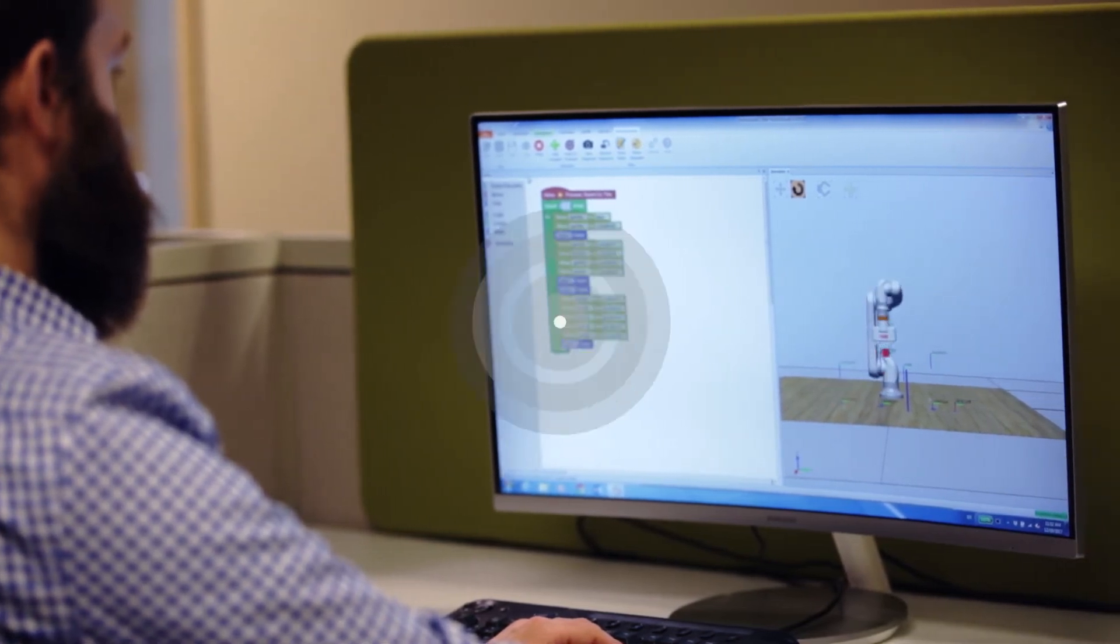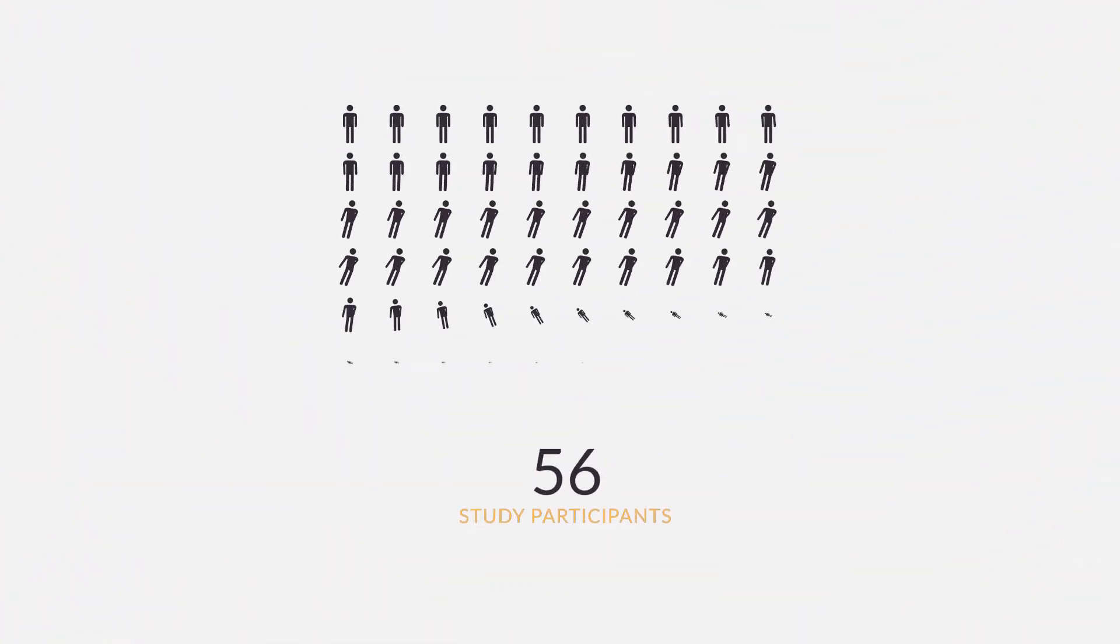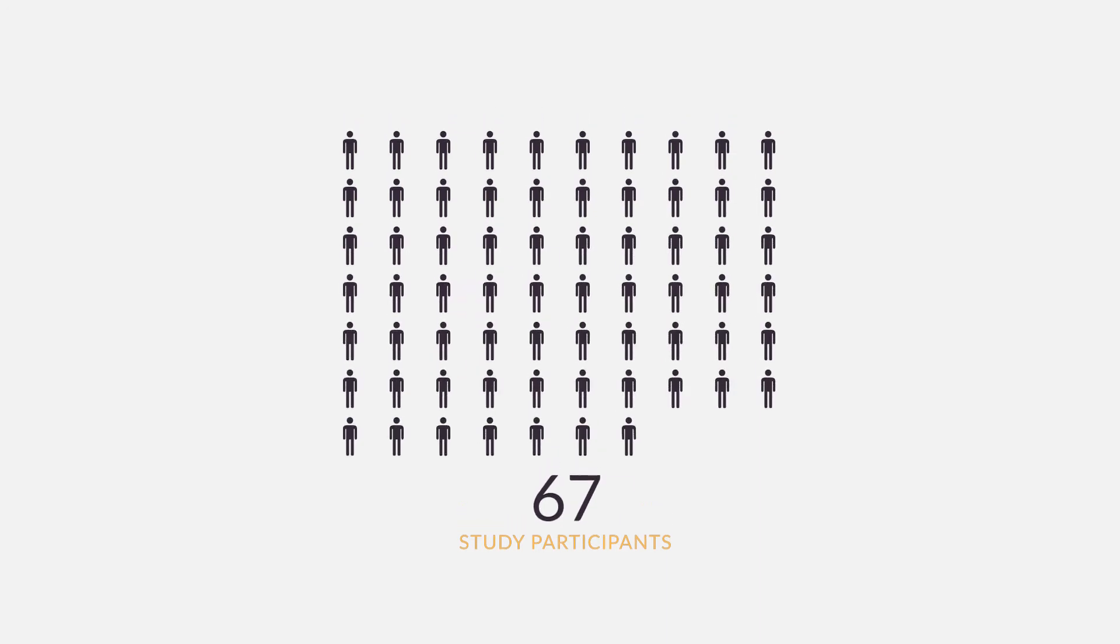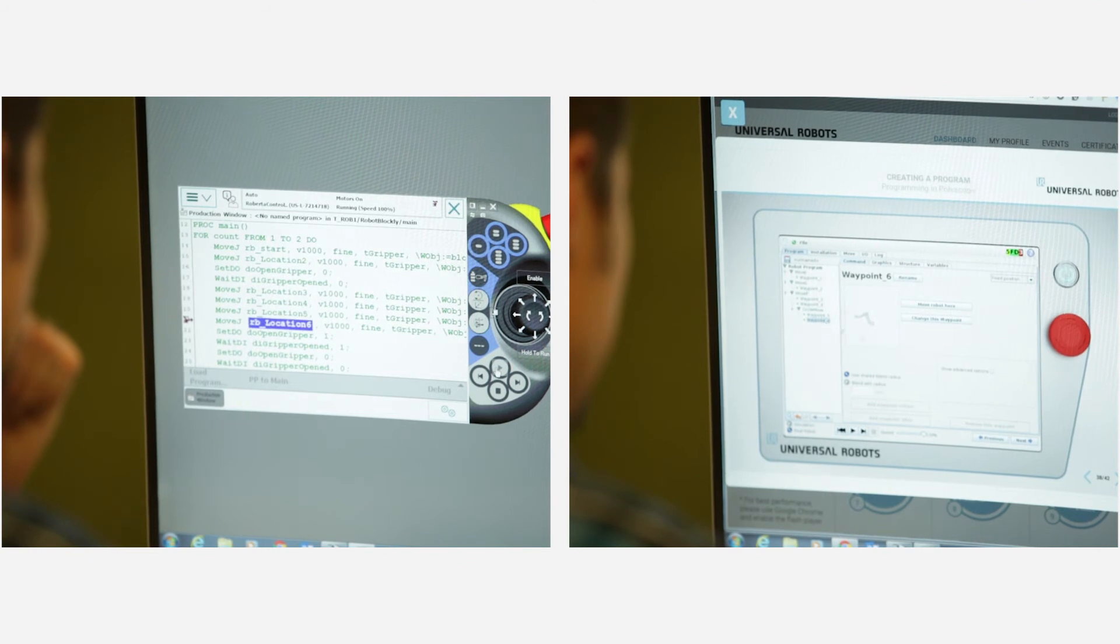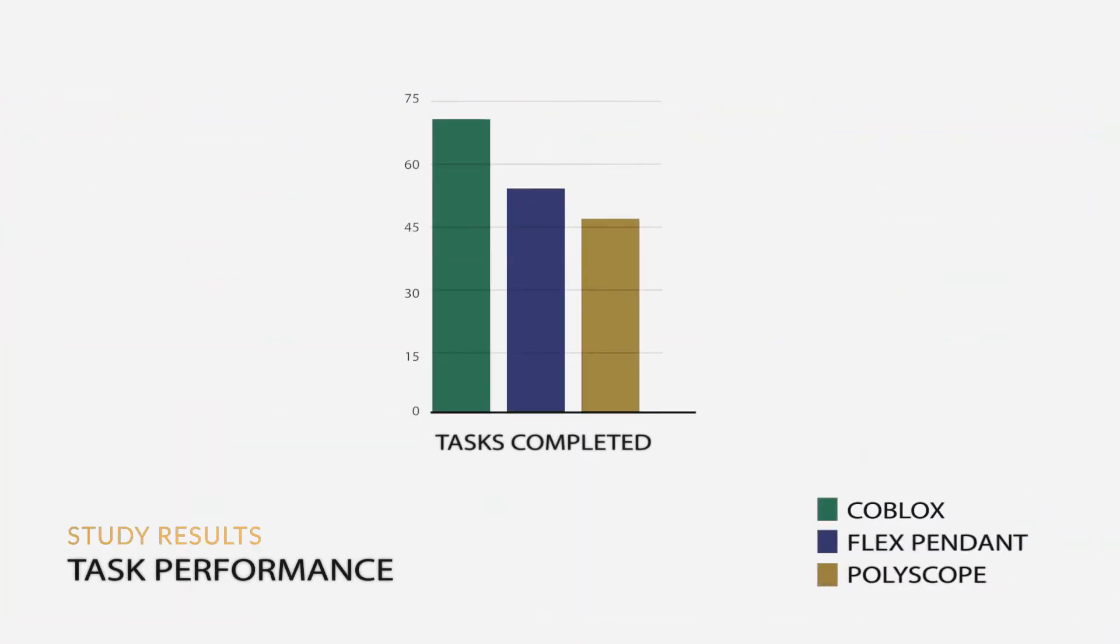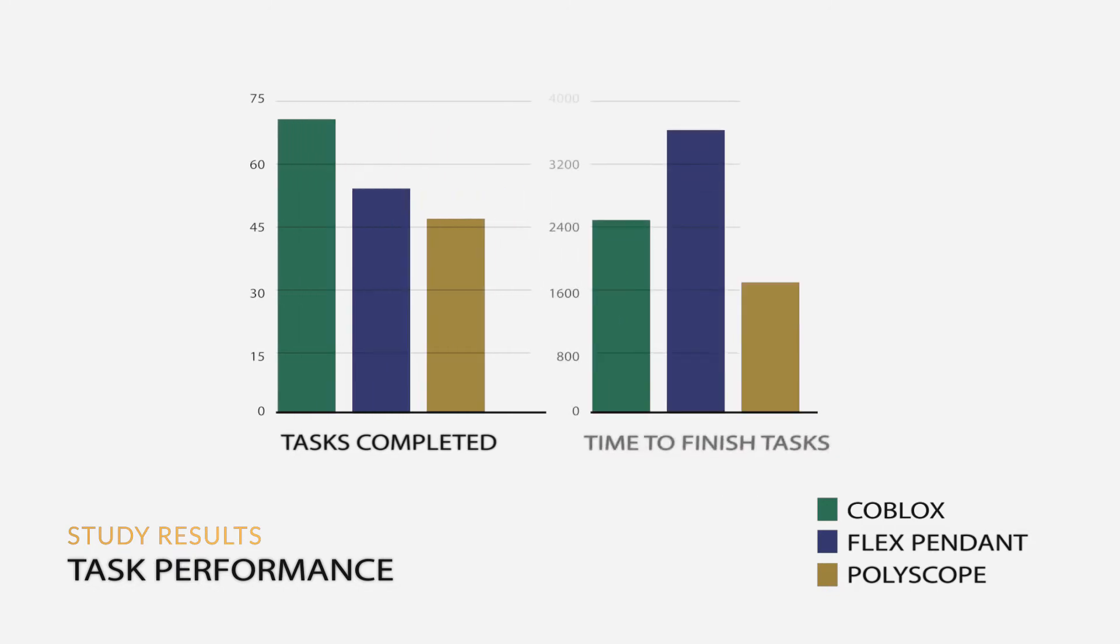To evaluate we conducted a user study with 67 adult novices comparing it to two widely used tools: ABB's FlexPendant and Universal Robots PolyScope. Using CodeBlocks users completed at least 21% more tasks and they completed them at least 37% faster.